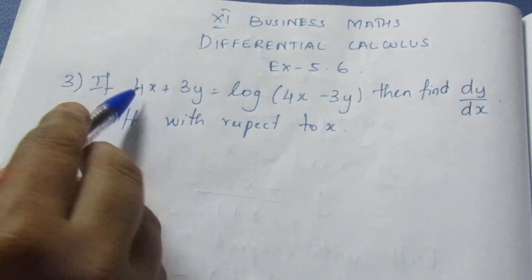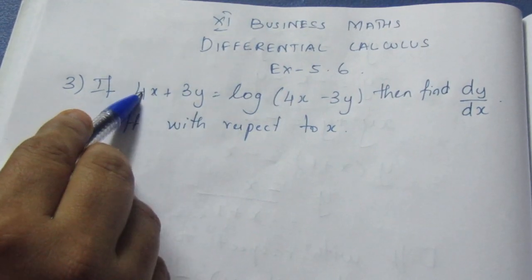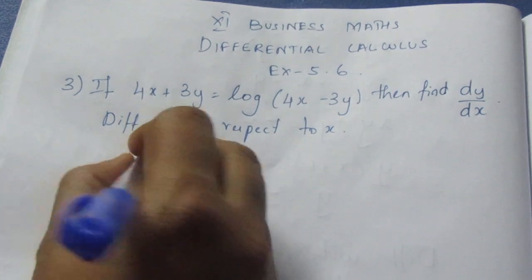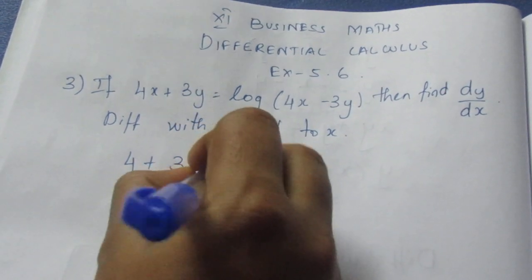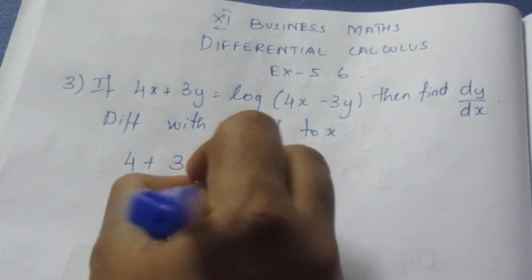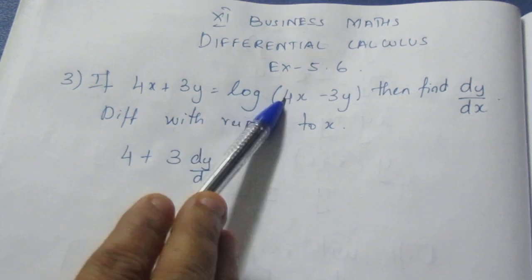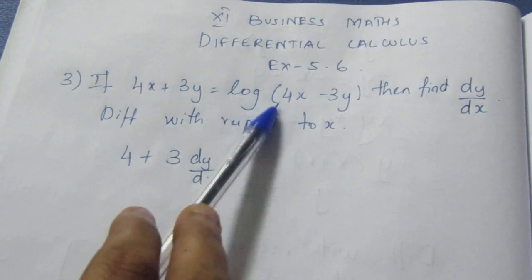Let's do the differentiation with respect to x on the left-hand side. Then 4 into 1 gives 4, plus 3 dy by dx. This is equal to log x, and the derivative of log x is equal to 1 by x.